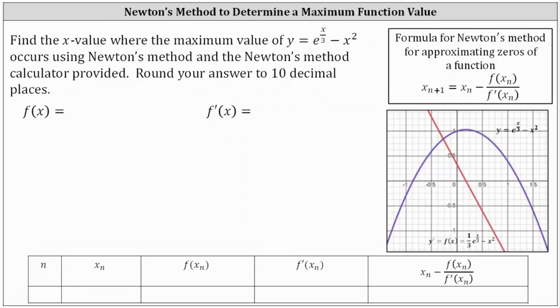We're asked to find the x value where the maximum value of y equals e to the power of x divided by 3 minus x squared occurs, using Newton's method and the Newton's method calculator provided. We're told to round to 10 decimal places.